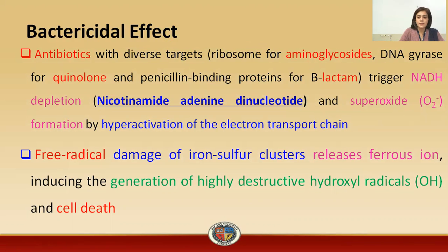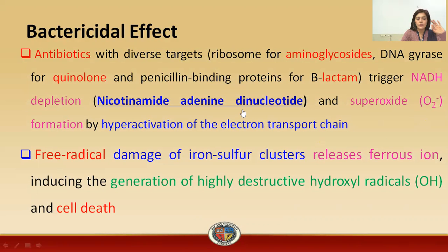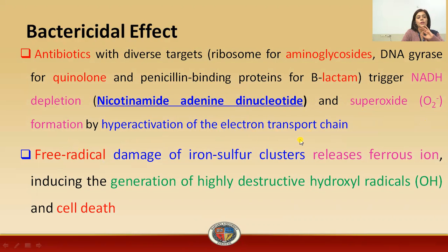What is their first step? They will deplete NADH — that is nicotinamide adenine dinucleotide. Secondly, and most importantly as research articles mention, they result in production of free radicals and superoxides. These are generated by the over-activation or hyper-activation of the ETC, that is the electron transport chain.